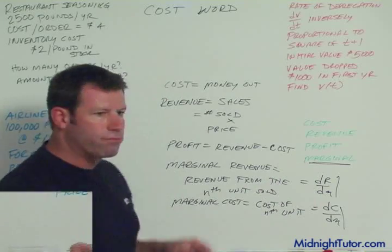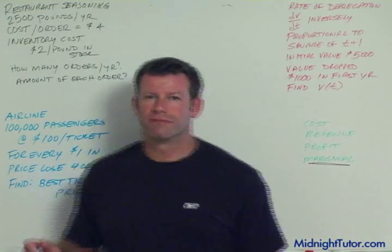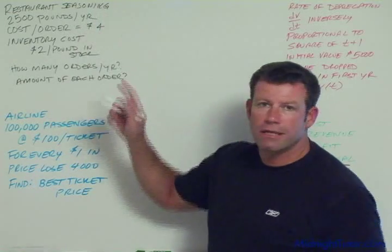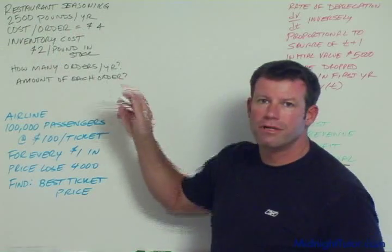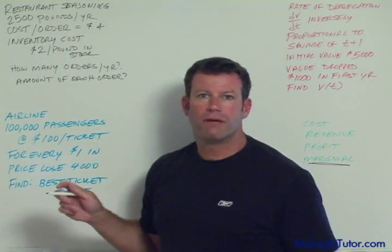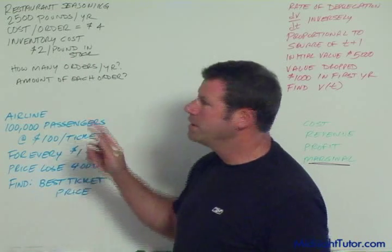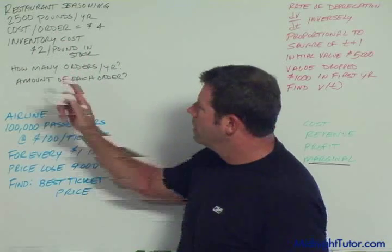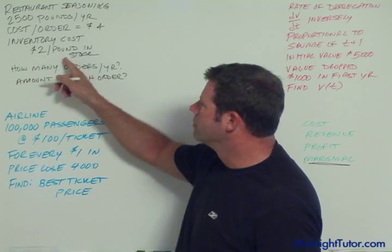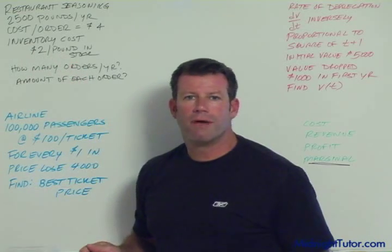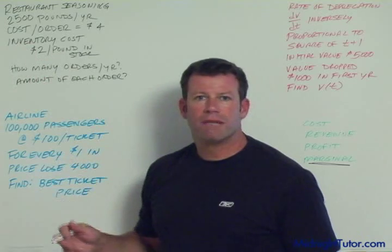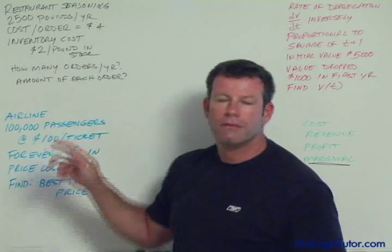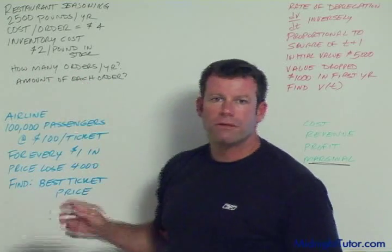Now let me erase this and go through these problems. The first one has to do with a restaurant that orders seasoning — it needs 2,500 pounds of seasoning per year. They have a rather bizarre relationship with their supplier: it costs $4 every time they place an order, and there's an internal carrying cost of $2 per pound based on the amount of seasoning in stock — maybe because of refrigeration or space. The question is how many orders per year and the amount of each order to minimize the cost.